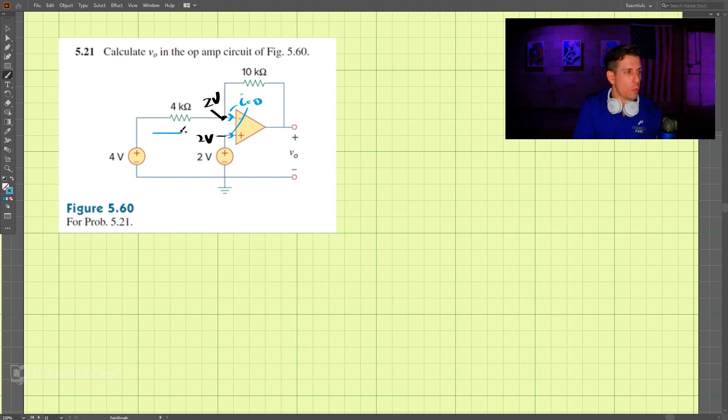And we need to figure out i1. So if i1 is coming here, it is also going up here. So this is also i1 across this resistor up here.